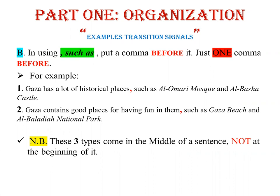To conclude: these three transition signals — 'for example,' 'for instance,' 'such as' — appear in the middle of a sentence, not at the beginning, when followed by nouns. If your complement is a complete sentence, use 'for example' or 'for instance' with a comma after them, and they appear at the beginning of a new sentence. If your complement is only a noun or group of nouns, all three can be used, appearing in the middle of a sentence. 'For example' and 'for instance' are surrounded by commas; 'such as' only takes a comma before it.